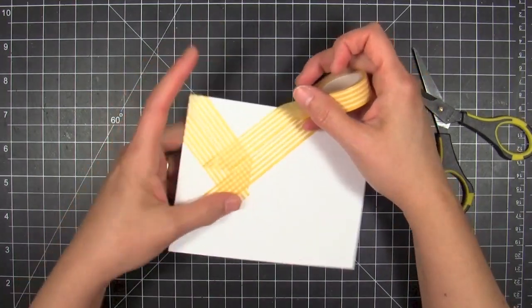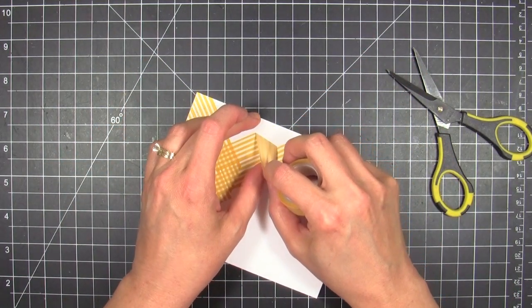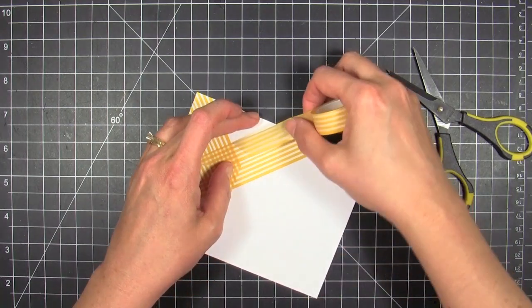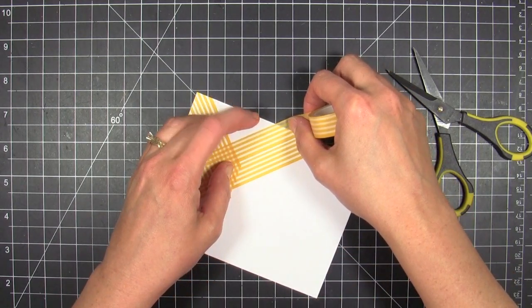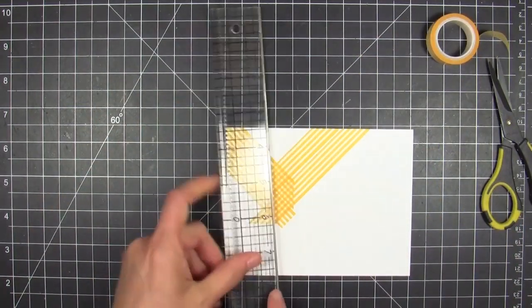We'll go ahead and trim off the excess, and once we have it perfectly positioned, I can trim it off. But it looks like I was a little bit off there and I needed to straighten it out, so we'll just get that taken care of and then we can trim it off.